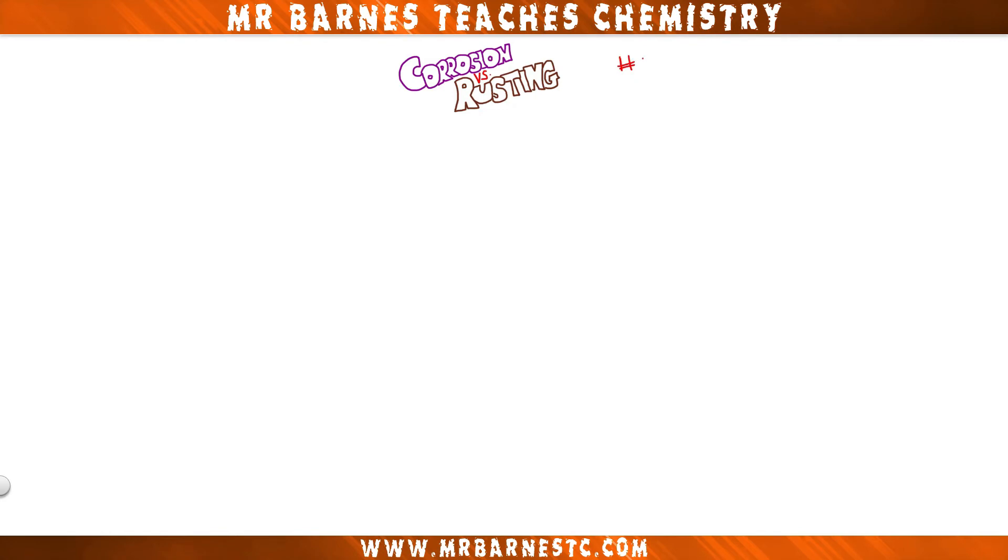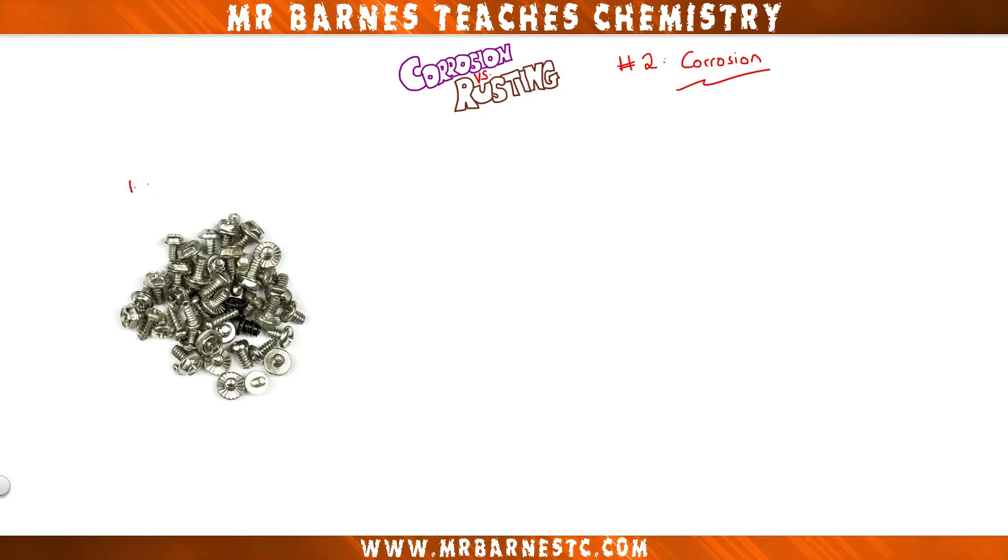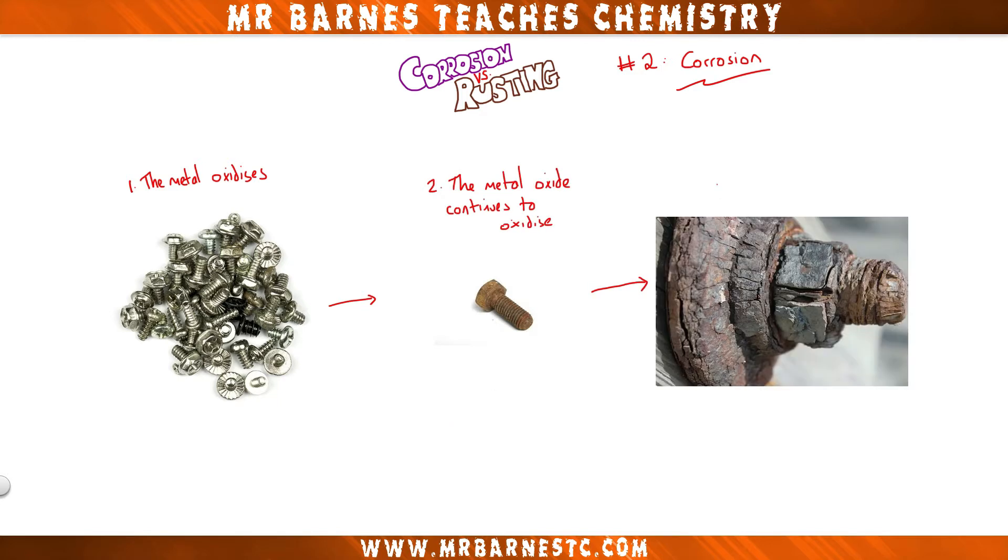Now that we know that oxidation is the addition of oxygen and the loss of electrons, let's move on to corrosion. If we take any reactive metal and expose it to air, it will oxidise. Now, over time, that oxidation will continue, and more and more of the metal will turn into an oxide, and that metal will begin to weaken. This is what corrosion is. So our definition for corrosion is the destruction of a metal by oxidation, or rusting.